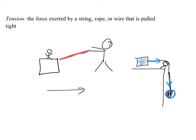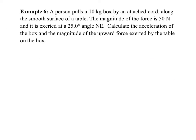In these examples, we'll see how tension is one of Newton's third law equal-and-opposite pairs. Example 6: a person pulls a 10-kilogram box by an attached cord along the smooth surface of a table. The magnitude of the force is 50 newtons at an angle of 25 degrees northeast. Calculate the acceleration of the box and the magnitude of the upward force exerted by the table on the box.